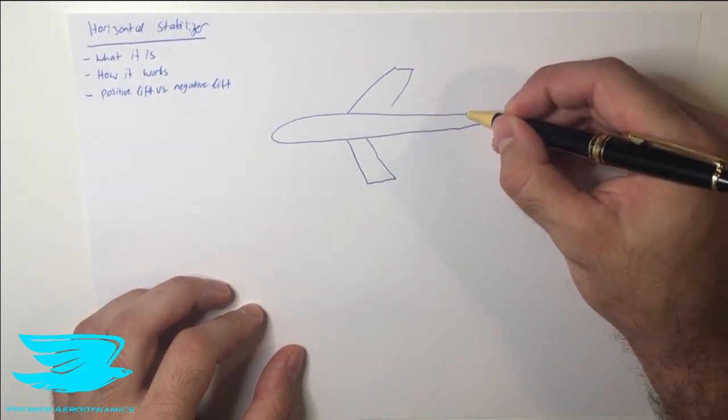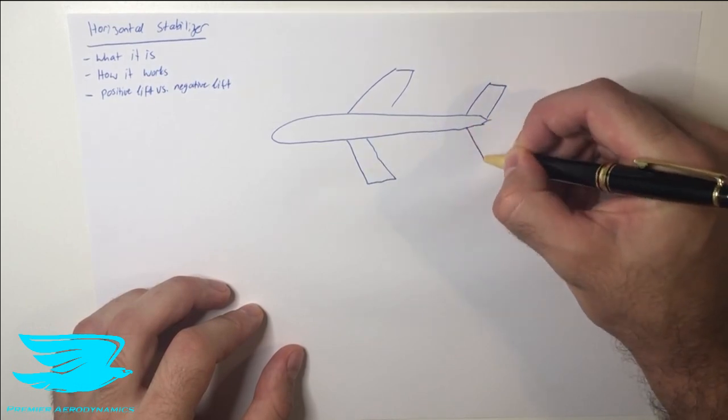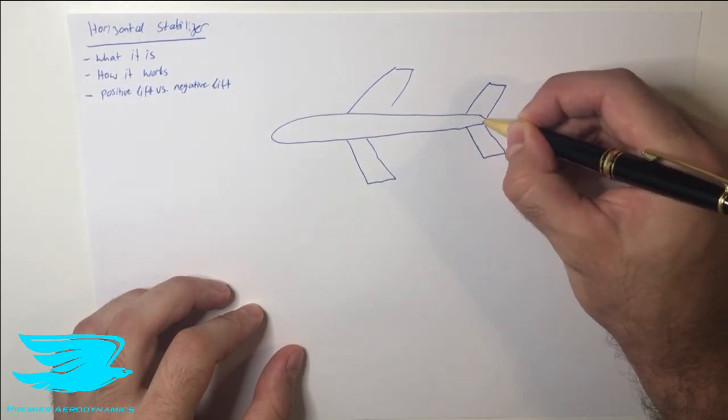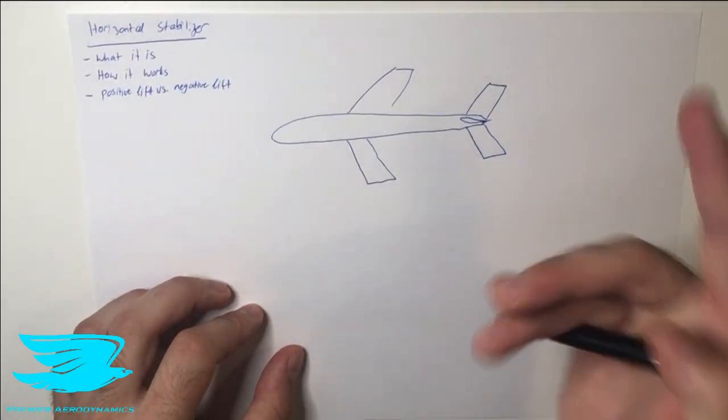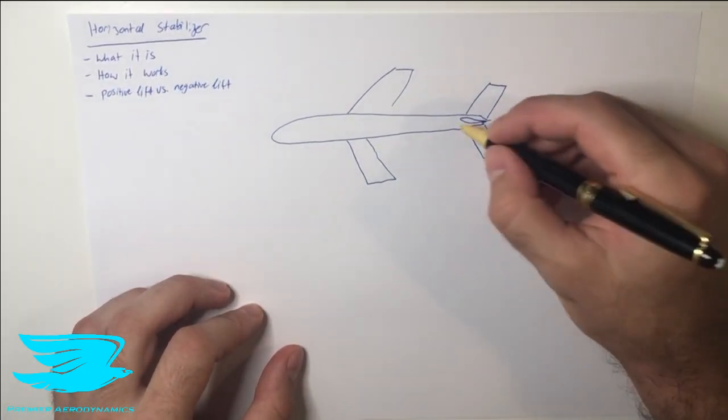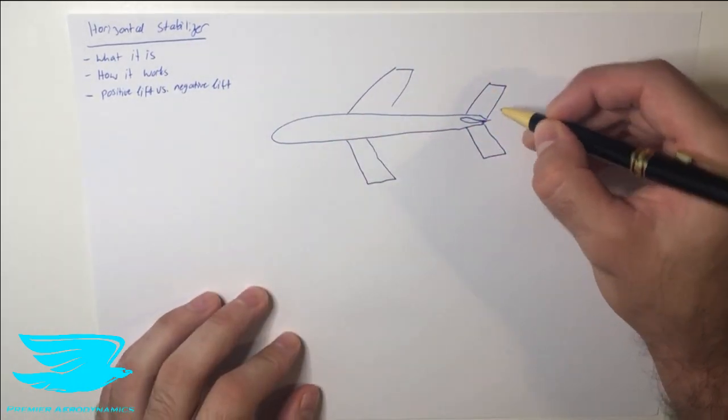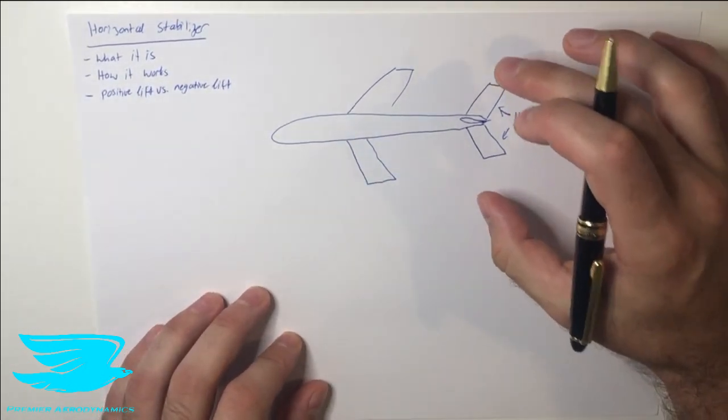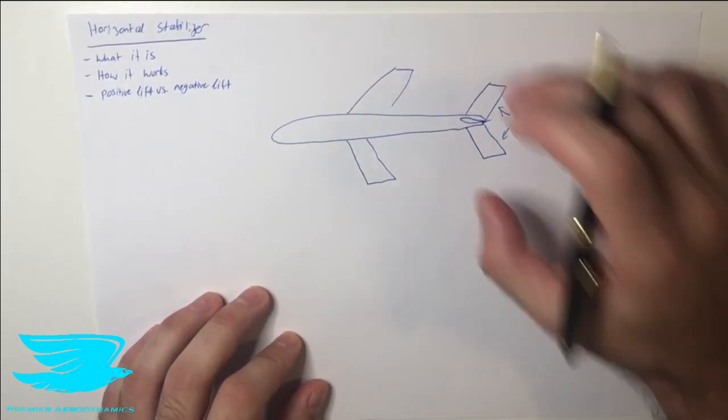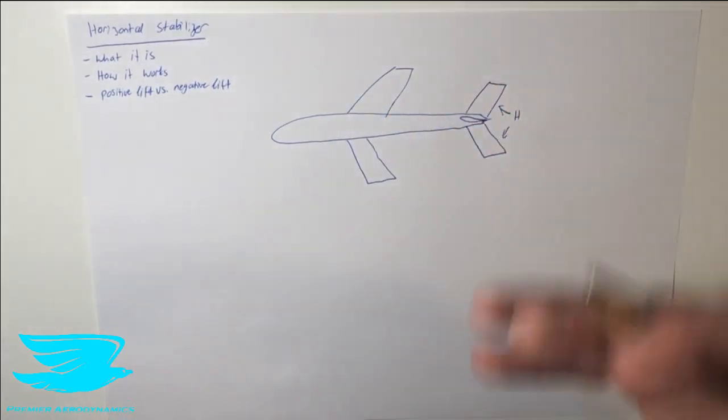And then in the back we have the tail section and we have both the horizontal part and the vertical part which we went through in the last video. If you haven't checked that out, check that out here in this card here. So the tail is made of these two sections, the vertical stabilizer and the horizontal stabilizers. These are the horizontal stabilizers here. And their function is to produce a certain amount of force to make the aircraft stable.